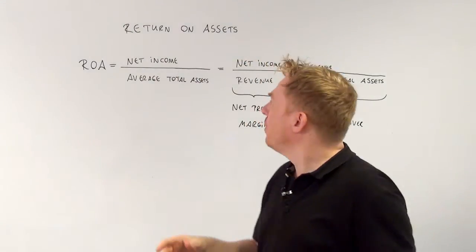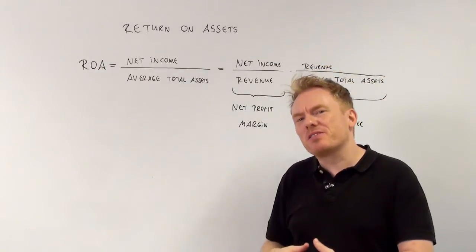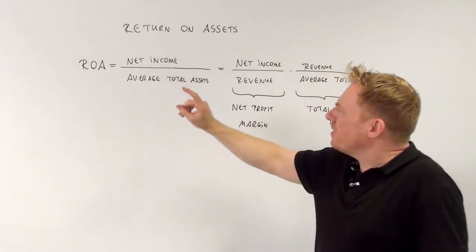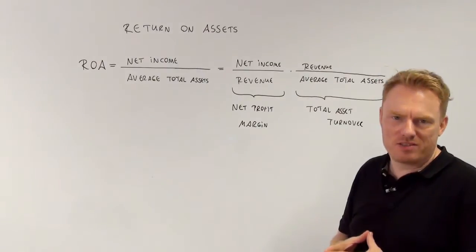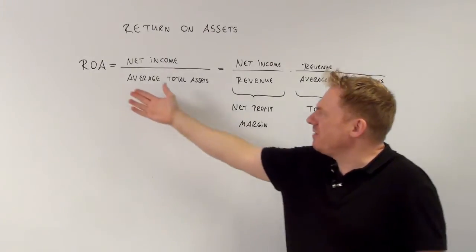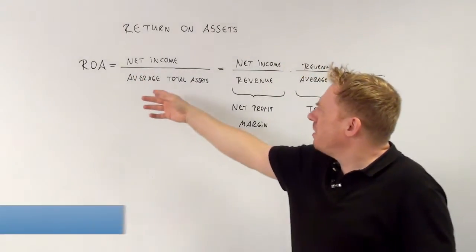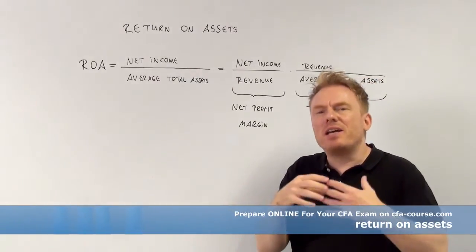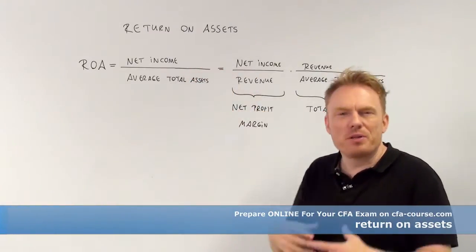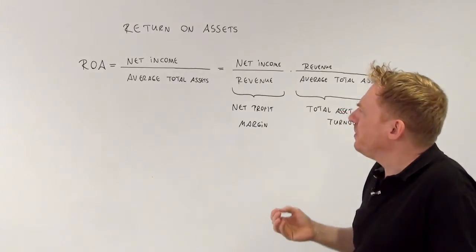Welcome to our next video — we're talking about return on assets. There are different ways of computing return on assets. The first way is this fraction: net income divided by average total assets equals return on assets. The name itself gives the idea already, because if we divide by average total assets, it's a number that refers to total assets, so calling it return on assets is just the right way of describing this number.